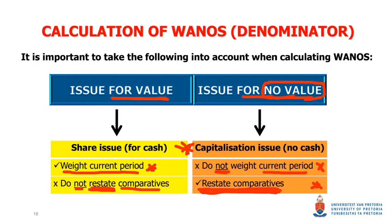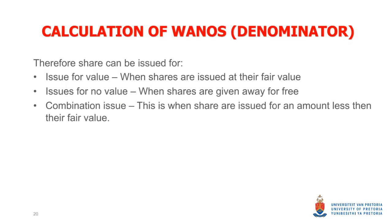This slide sets out the three types: a for-value issue where the share is given out for the fair value amount; a no-value issue where the share is given away for free; and a combination issue where the share is given out for less than fair value. We are not dealing with the combination issue in ACC 200 — it won't be tested — but I included it in the slide so you're aware it's possible.